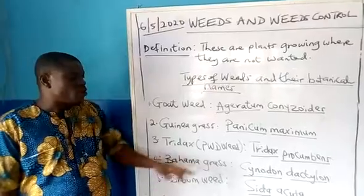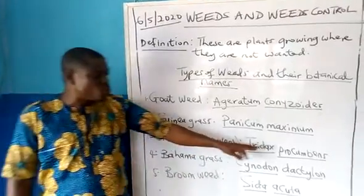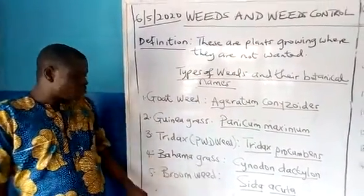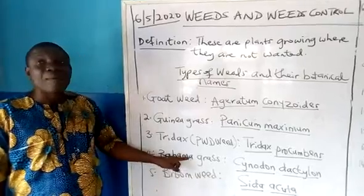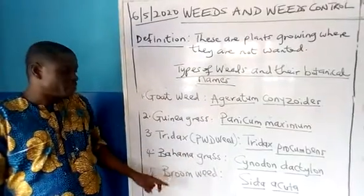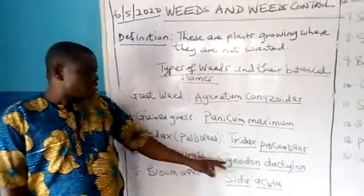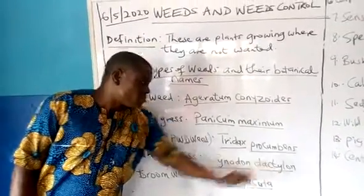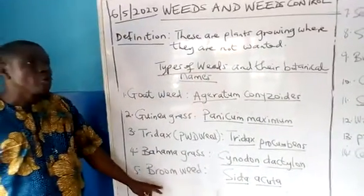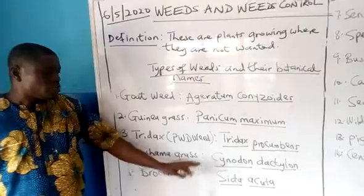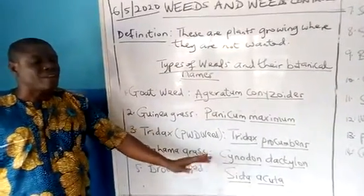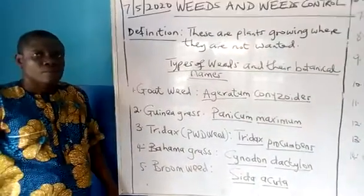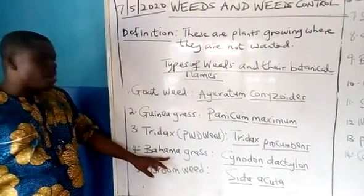You have what is called Bahama grass. Most times people confuse Bahama grass for carpet grass, but they are different. Bahama grass is called Cynodon dactylon. There is also what we call Broomweed, which is one of the toughest kinds of weeds — it can survive in any kind of condition.